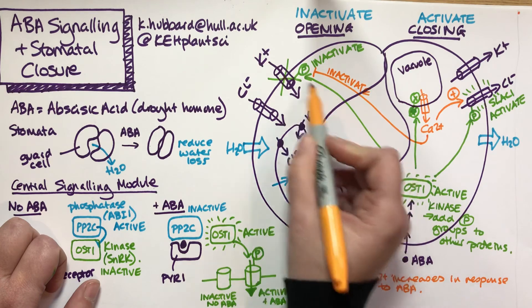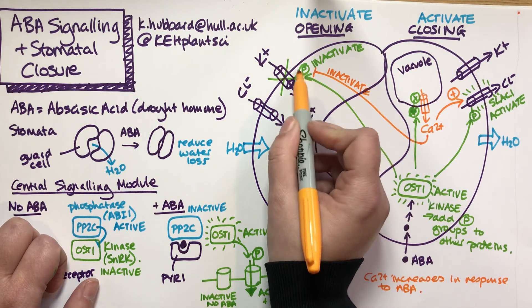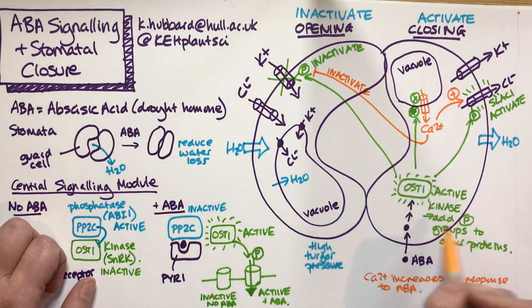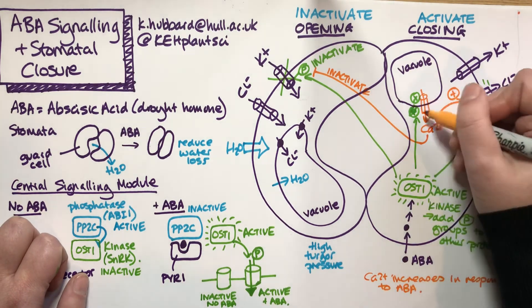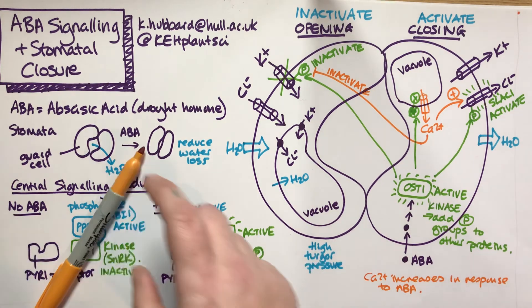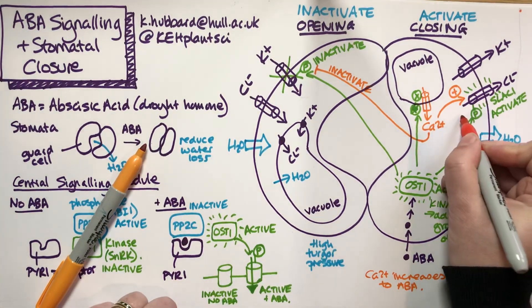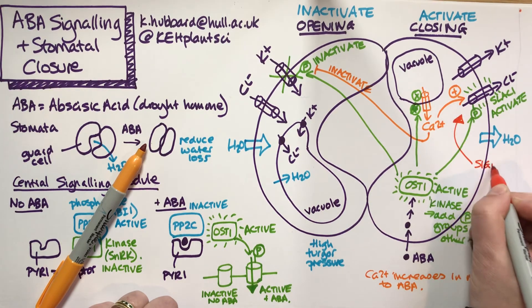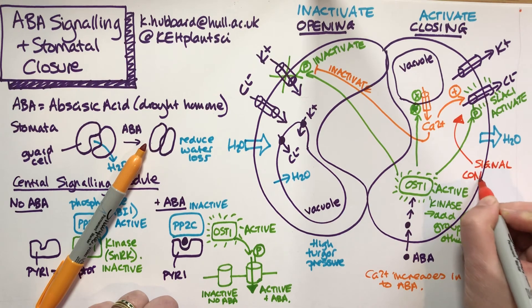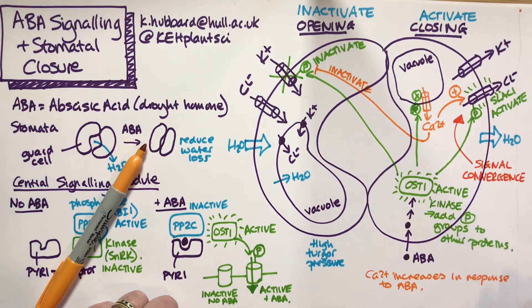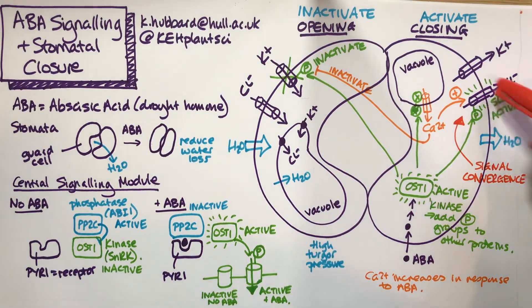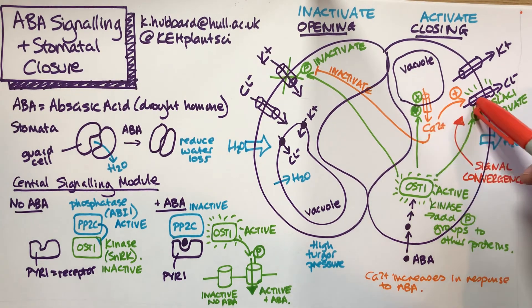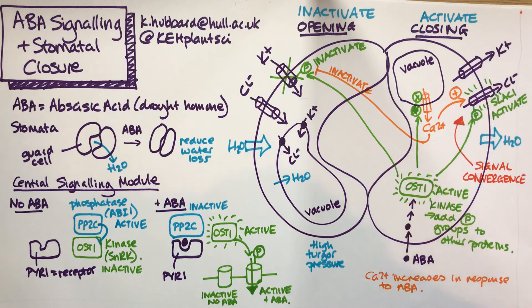That potassium inward channel is also sensitive to both calcium and phosphorylation. We have a sort of parallel signaling approach. It doesn't matter whether you go directly via OST1 or via this calcium route; we have what we call signal convergence, where two or more signals target the same protein. Here we've got a phosphorylation signal and a calcium signal, both targeting the same protein. In this case, both will activate the chloride channel.